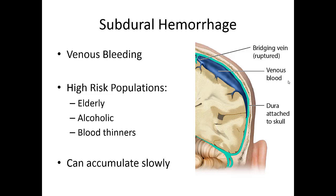Because subdural hemorrhage is venous and low pressure, the injury can occur almost 24 to 48 hours prior and doesn't become a problem until the blood collects and causes pressure on the brain. The cranium is a closed space with limited room for expansion. It's really important to realize that alcoholics are more prone to bleeding due to low platelets, and the elderly tend to be on blood thinners — so even a simple ruptured vein can lead to a devastating head bleed.